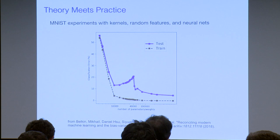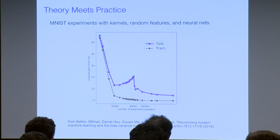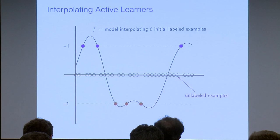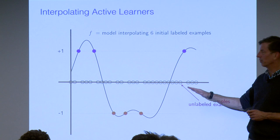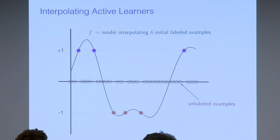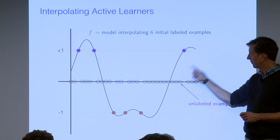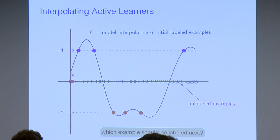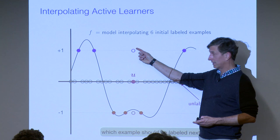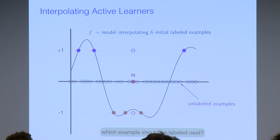Meena and I decided to take this understanding and bring it into active learning. In a simple one-dimensional problem with six labeled examples and many unlabeled ones, we have an interpolating function. The question is: which example should we choose next to have labeled? Whichever we choose, the label will come out plus one or minus one, and we have to decide which example to actually label.